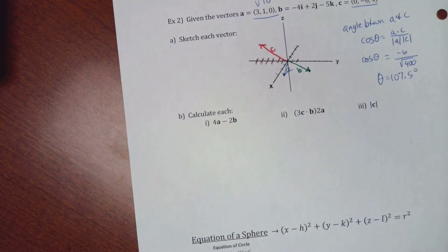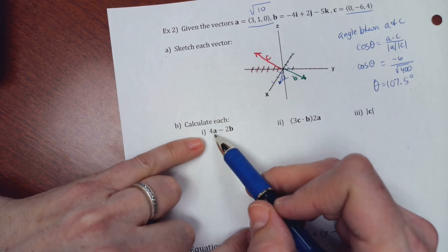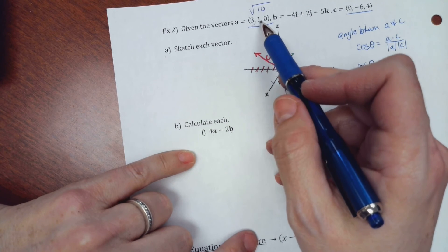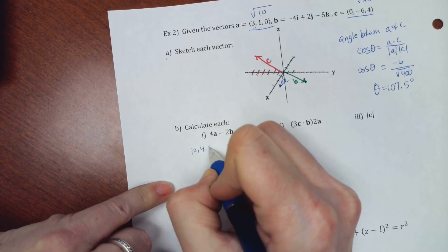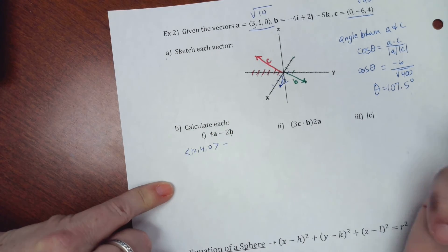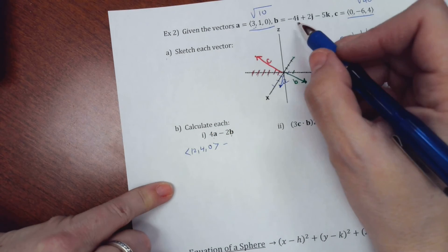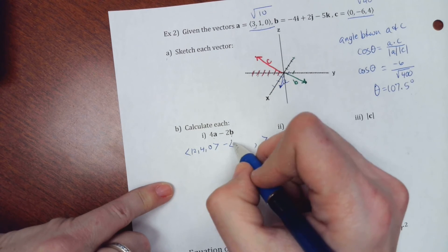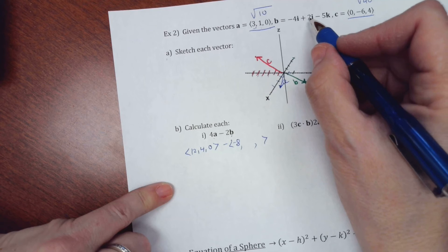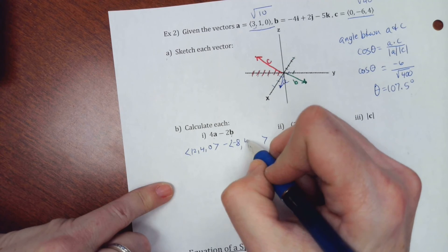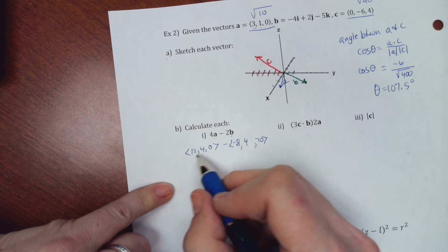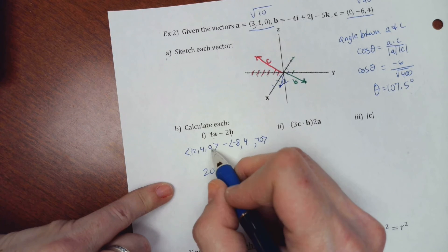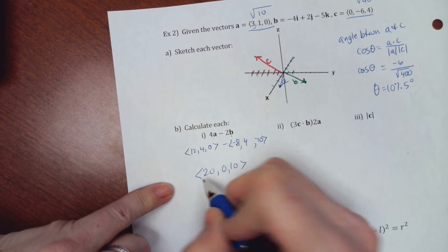Alright. So let's calculate each one down here. Let's see. 4A minus 2B. So 4A. So it's going to be 12, 4, and 0. 12, 4, and 0. Minus 2B. So 2 times B. I'm just going to put it in component form. 2 times that is negative 8. 2 times 2 is 4. And 2 times negative 5 is negative 10. So subtract these. 12 minus negative 8 is 20. 4 minus 4 is 0. 0 minus negative 10 is 10.